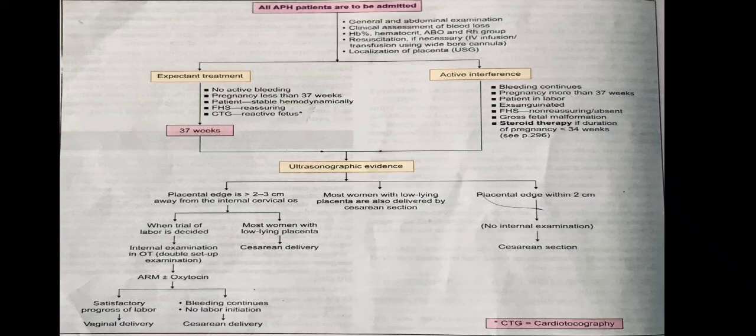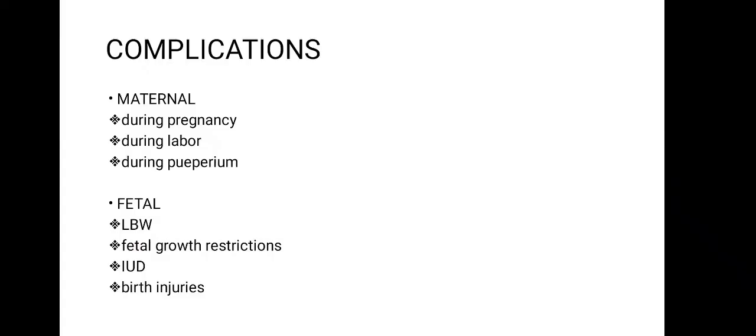If there is satisfactory progress of labor, proceed with vaginal delivery. If bleeding continues and there is no progress of labor, take the mother for C-section. In other cases with low-lying placenta, the mother is taken for C-section as well. If the placental edge is within 2 cm of the internal os, no internal examination is done and C-section is performed.